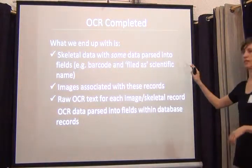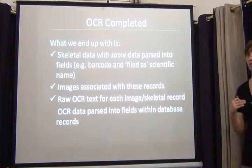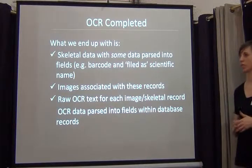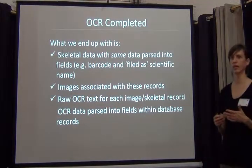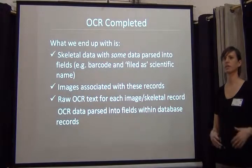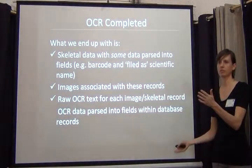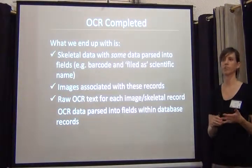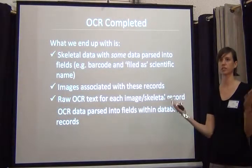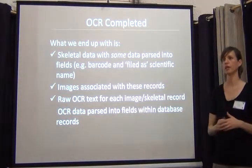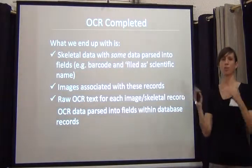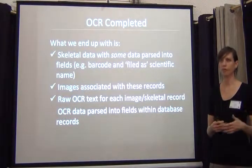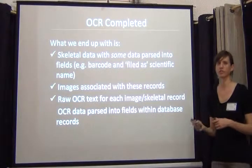At this point, what we have is skeletal data with some data parsed into fields — but those are the ones we entered by hand: scientific name and barcode. You have an image associated with each one of these files and raw OCR text. We could take all the raw OCR text, import it back into the database into a big notes field, and put it all online. We can sort everything by scientific name, and external users can query text for any term they might be looking for. It's not the best way to find data, but at least we can get stuff up immediately, even without data records. We're actually putting up about 300,000 new records a year using this method.